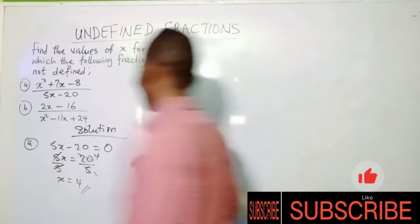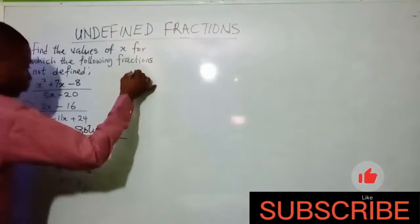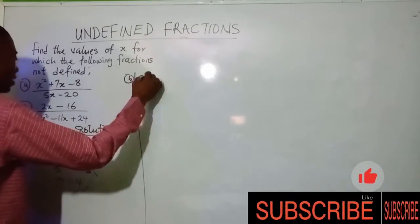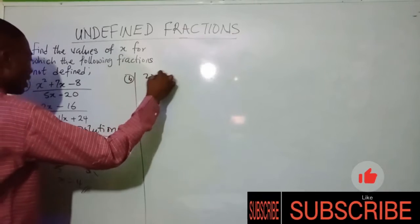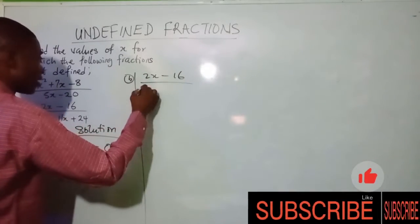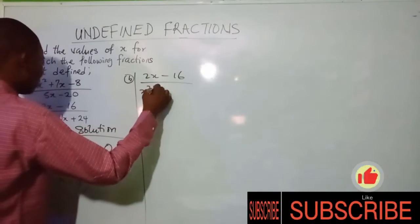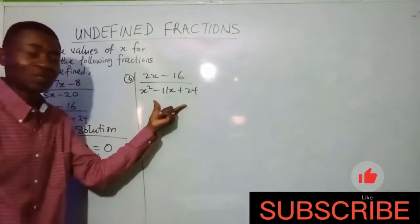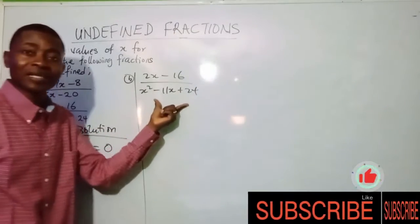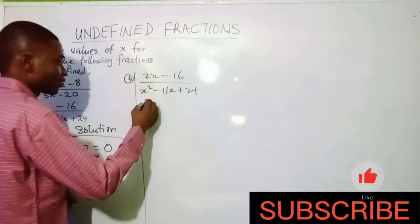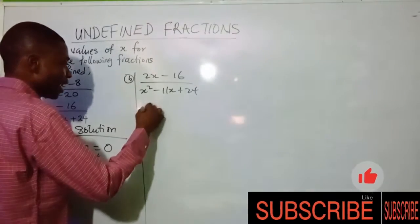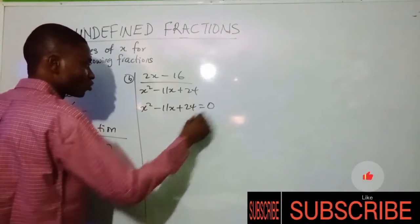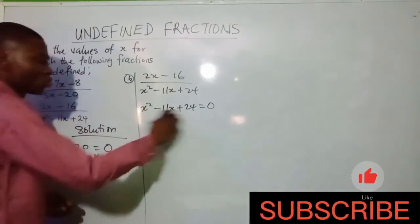Now let's look at example two. We have 2x minus 16 over x squared minus 11x plus 24. Remember, attention is always on the denominator. So our denominator is x squared minus 11x plus 24, and we set it equal to zero to find the values of x.